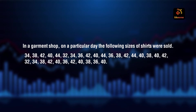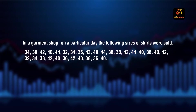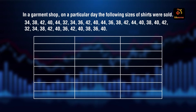Here the minimum size is 32 and maximum size is 44. We will make three columns: one for the observations, that is the shirt sizes; the second one is for tally marks; and the third column is for frequency.